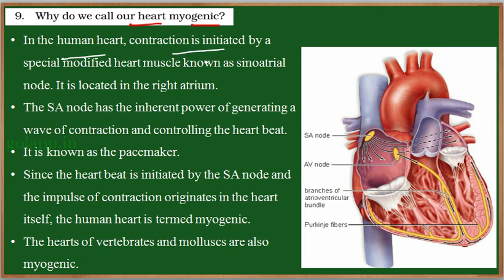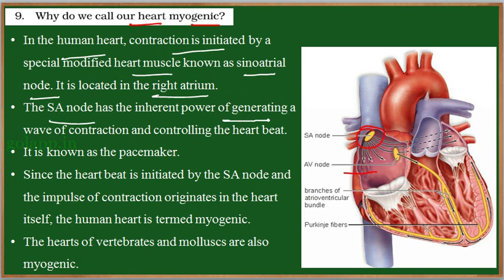In the human heart, the contraction is initiated by a special modified heart muscle known as the sinoatrial node. Here we can see this specialized cardiac muscle — it is a modified heart muscle which can initiate an electrical impulse that signals for contraction. It is located in the upper region of the right atrium and is called the SA node. The sinoatrial node has an inherent power of generating a wave of contraction and it controls the heartbeat.